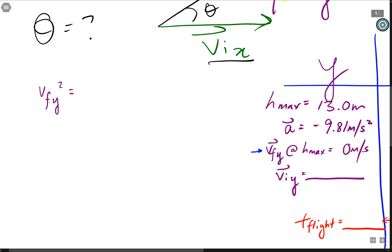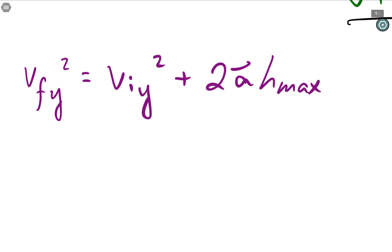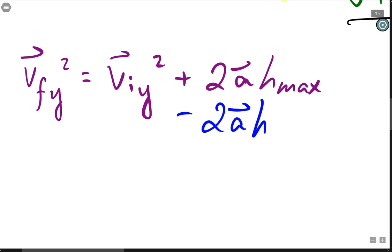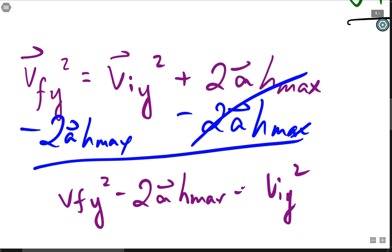vfy squared equals to viy squared plus 2a. Instead of s, I'm going to write h max because I'm going to look at the initial velocity before the ball reaches the maximum height. I'm going to isolate for viy. I'm going to subtract 2a h max from both sides of our equation. And this one gives us vfy squared minus 2a h max equals to viy squared.